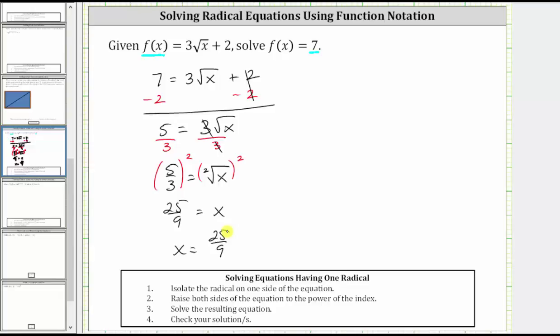Now let's verify this is the solution by substituting 25 ninths for x back into the original equation. So performing substitution we would have seven equals three times the square root of 25 ninths plus two.